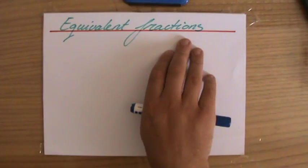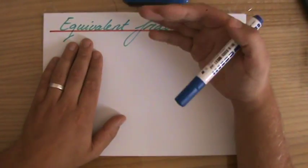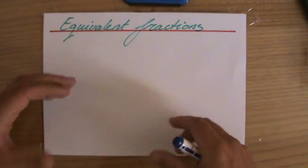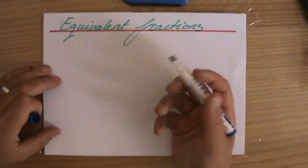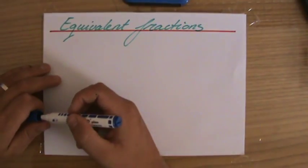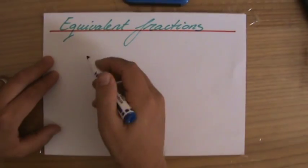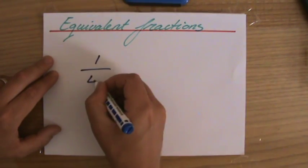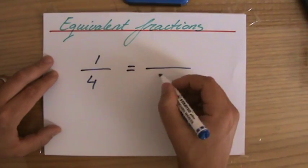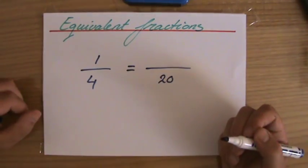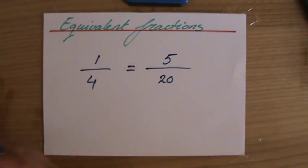Equivalent fractions are fractions that are equal, that are equivalent, that are the same. I'm going to show you now what it's based upon by looking at two examples, and then in the next video we're going to do more example questions together. An equivalent fraction, for instance: one over four is the same as five over twenty.